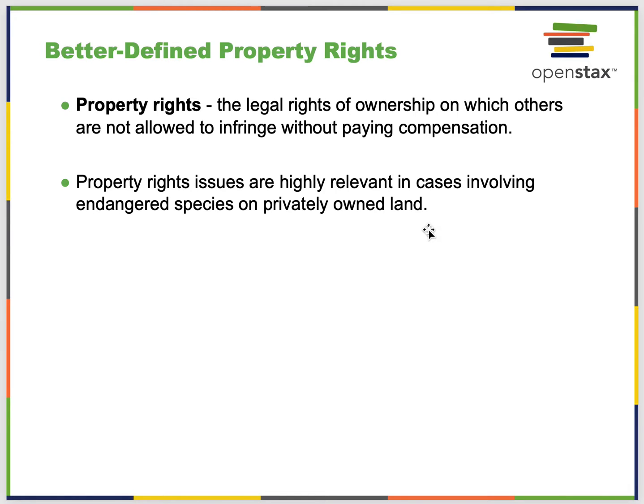Property rights are legal rights of ownership on which others are not allowed to infringe without paying compensation. They are highly relevant in cases involving endangered species on privately owned land. In New York City, for example, they sell air rights. One externality is that if everyone builds high-rise buildings, sunlight won't reach narrow streets. So they limit high rises per square foot based on surrounding buildings. You could sell your air rights to someone else, limiting your property to two or three stories rather than forty.